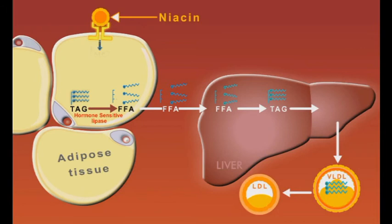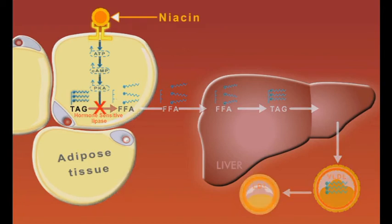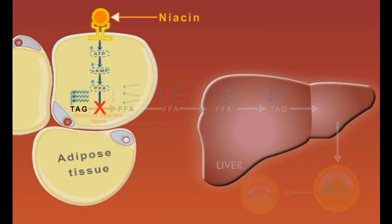Niacin decreases plasma LDL concentration by inhibiting the first step in this cascade, which is the mobilization of free fatty acids from adipocytes.